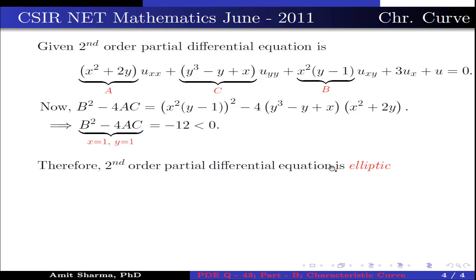Therefore, second order partial differential equation is elliptic. This implies it has 2 imaginary curves, that is 0 real characteristic curve. Hence option 1 is true.